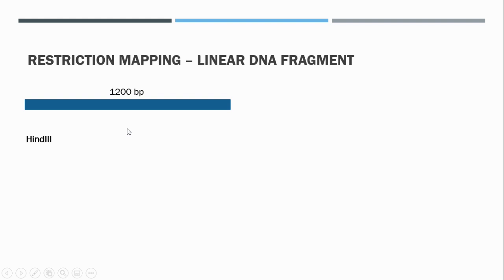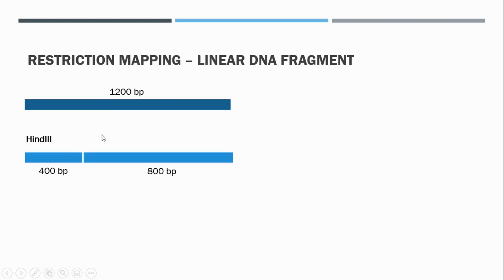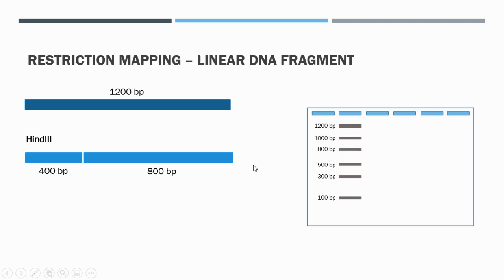We're going to expose this linear DNA fragment to the HindIII restriction enzyme and run those products on an agarose gel. When we cleave this 1200 base pair fragment with HindIII, we end up with two fragments on the agarose gel. We've got the uncut fragment at 1200 base pairs, and HindIII produces an 800 and a 400 base pair fragment.